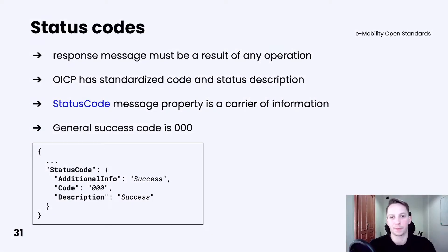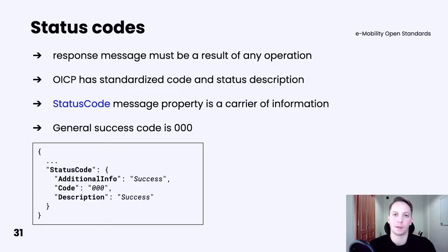A response message should be a result of any kind of operation in services. In this response message, you must also include information about the status of a given operation. OICP has its own standardized status code and description format. The status code message property is a carrier of that information. The general status code is 000. Below you can find an example of how it looks in practice and what a typical status code response looks like.